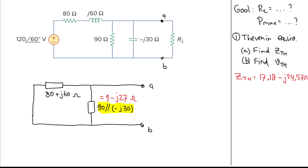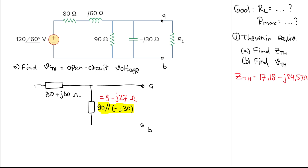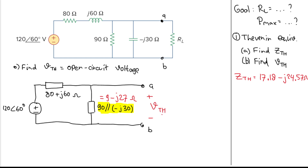Now let's move on to the second step, which is to find Vth. Vth is the open circuit voltage at terminal ab — we remove RL and calculate the open circuit voltage. We still have the voltage source, which is 180∠60°. The Thevenin voltage Vth can be calculated using the voltage divider.